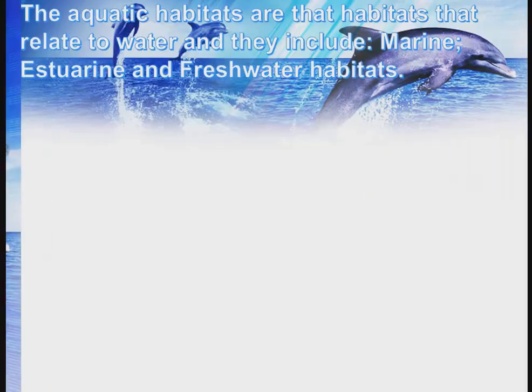What is an aquatic habitat? Aquatic habitats are habitats that relate to water. We have three major types: the marine habitat, the estuarine habitat, and the freshwater habitat. These are the three major types of aquatic habitat.